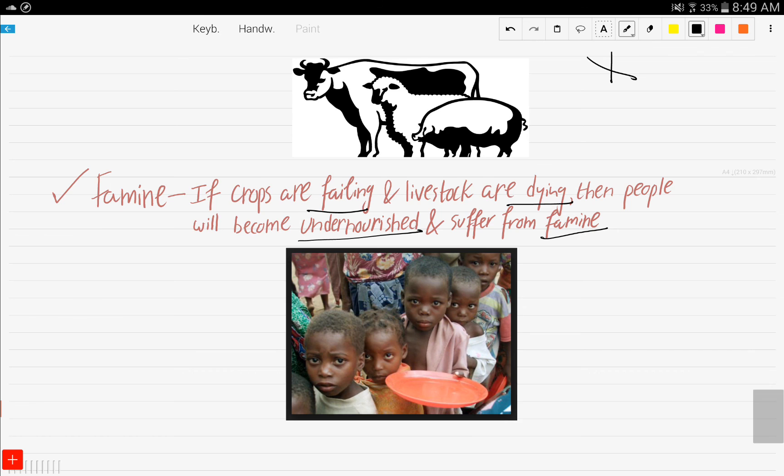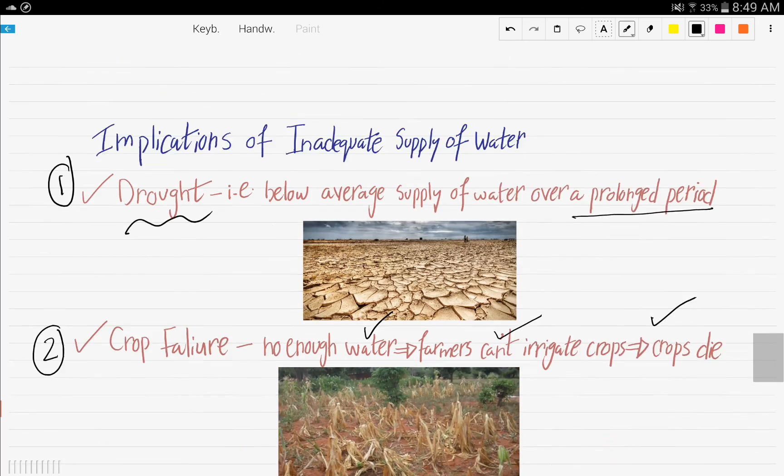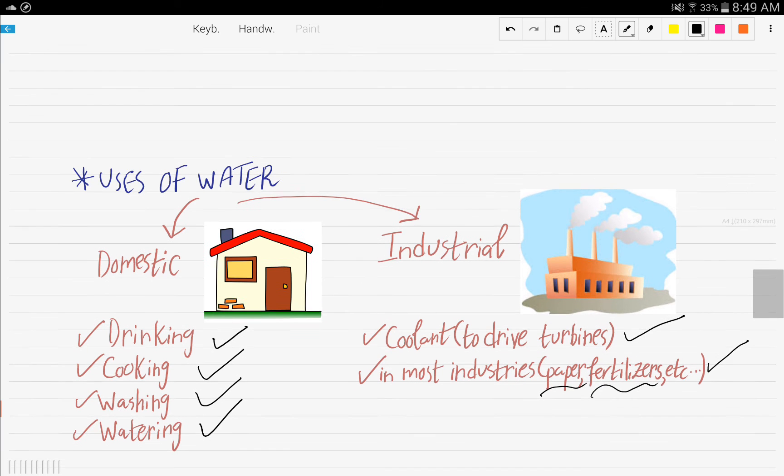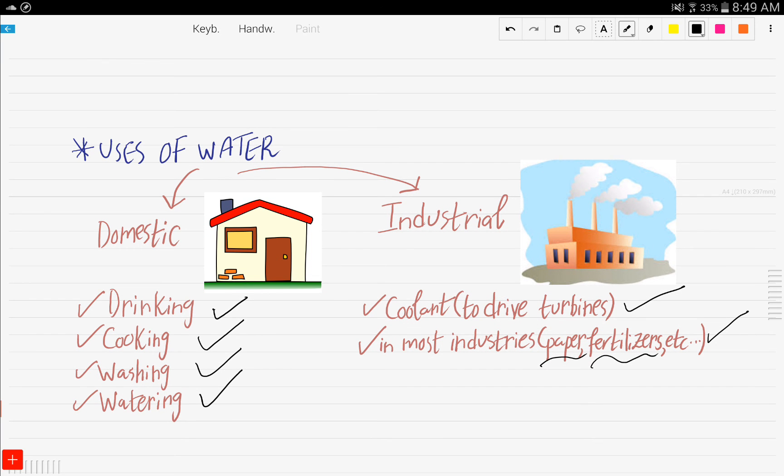These were pretty easy two topics to cover, and these were the implications of inadequate supply of water and the uses of water.